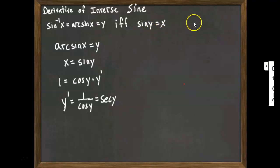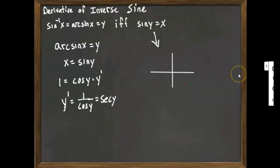We use the fact that sine of y equals x and draw the picture for that. For arc sine, your angles will be in either the first or the fourth quadrant. It doesn't matter which one we pick for the picture because cosine and secant are positive in both the first and fourth quadrants. So I'll draw the reference triangle in the first quadrant. There's my angle y, and we know that sine of y equals x. Using that information, we can complete two sides of this right triangle.